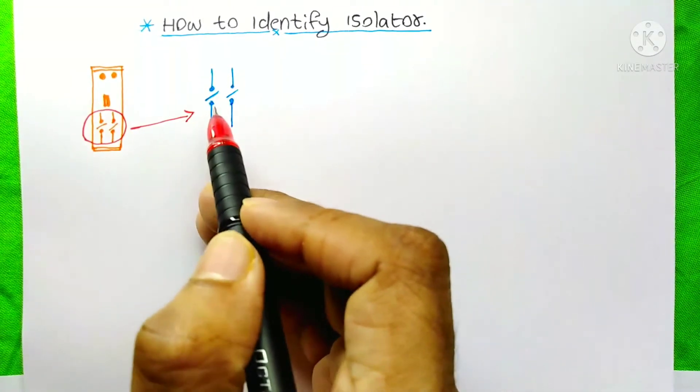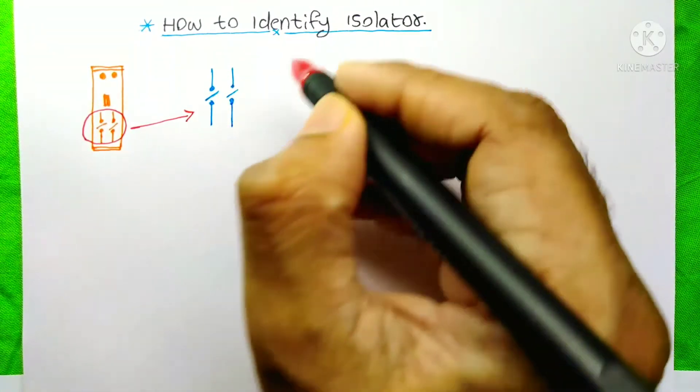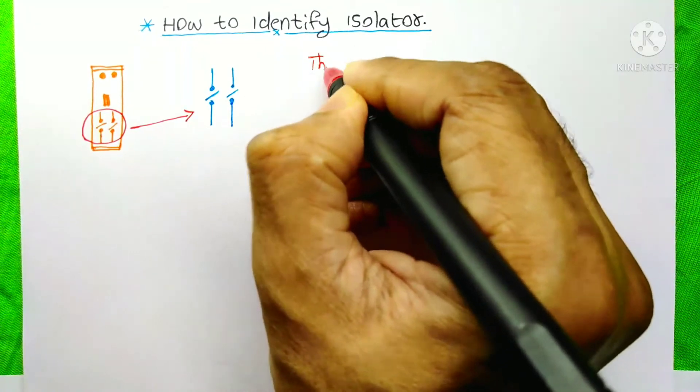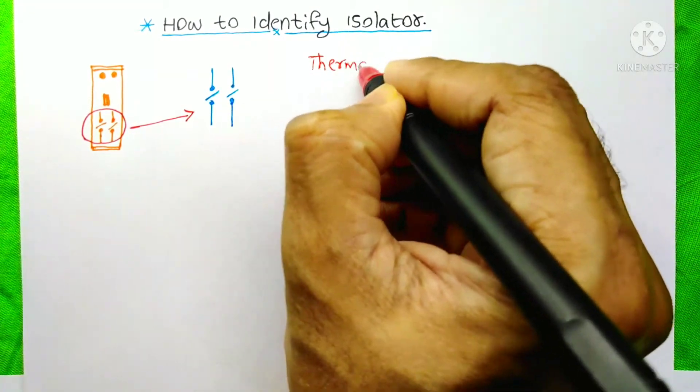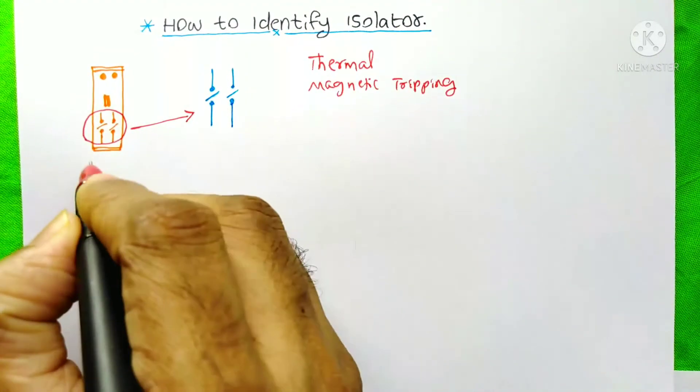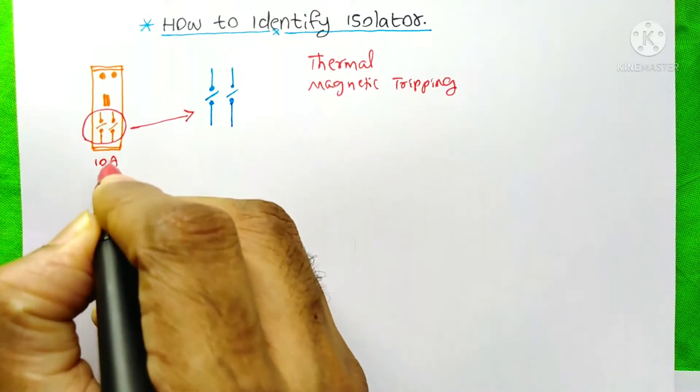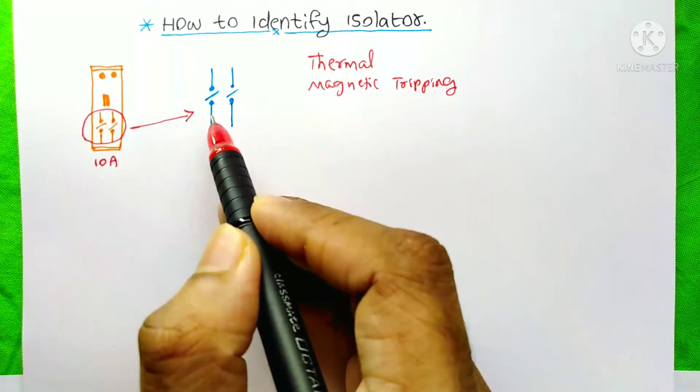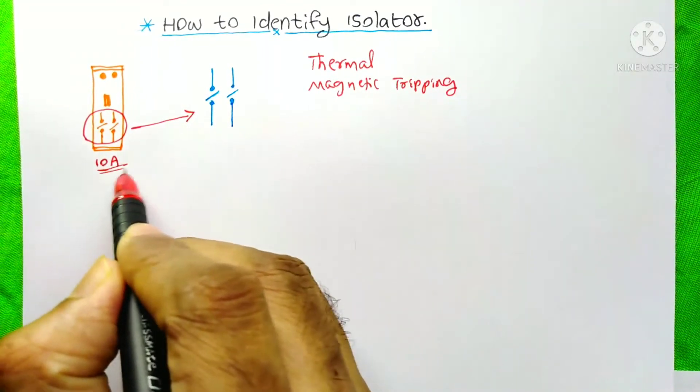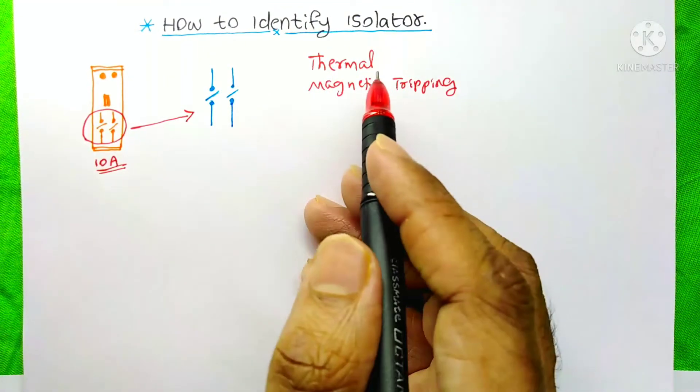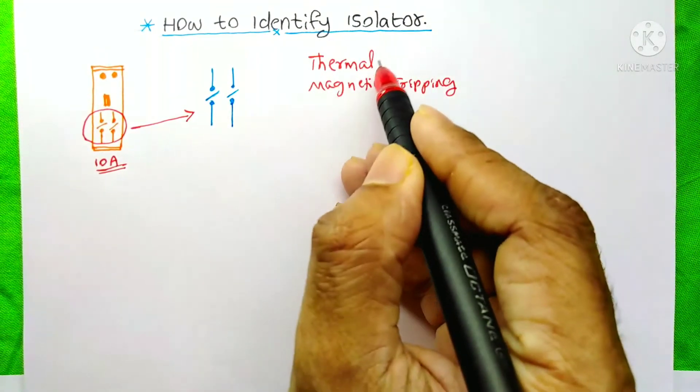These are only the normal switches. It will not give you any thermal and magnetic tripping functions. Suppose this isolator is of 10A, then if the current on this circuit is more than this 10A, then this isolator can't give you the thermal protection.